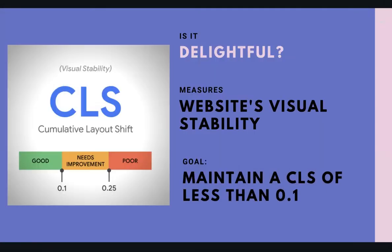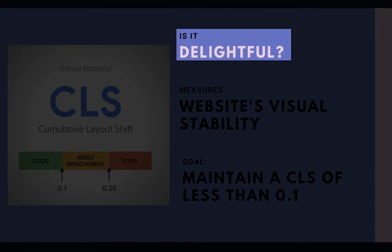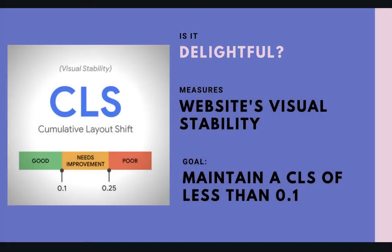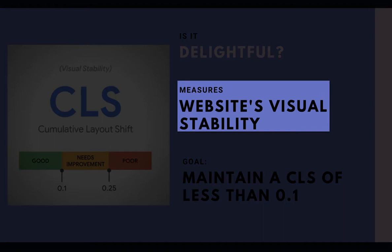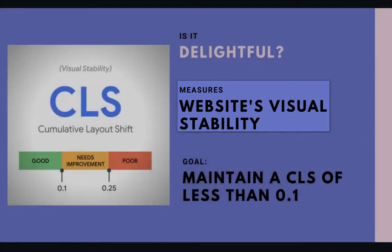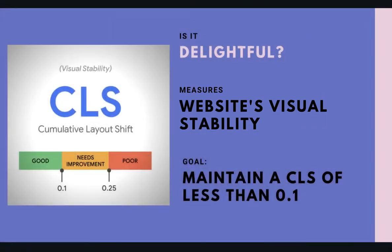All Core Web Vitals metrics answer a particular question. For CLS, it's framed around the question: is it delightful? Meaning, are the interactions smooth and natural, free from shifts and unexpected movements? CLS measures visual stability. In essence, the less shifty and the more visually stable the website is, the better.